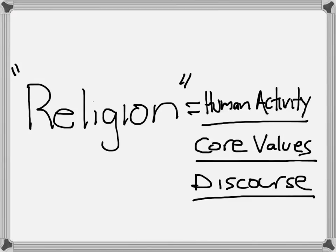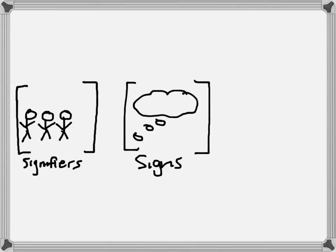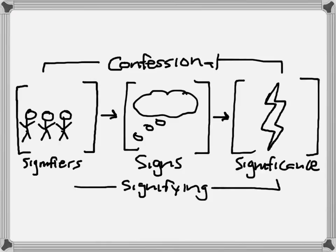That means our descriptions of these instances need to be a bit more nuanced. When we observe religion happening, we're really talking about signifiers, or people, taking signs, symbols — things that point your attention elsewhere — and people making those things significant. Their confessions of what is meaningful is really a complex process of filling signs with meaning, and we call that confessional signifying.